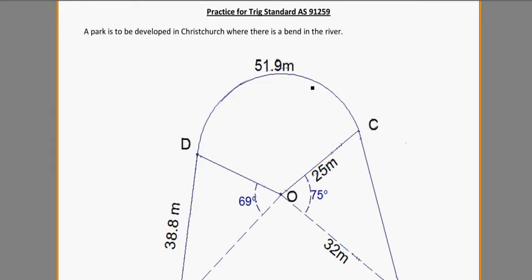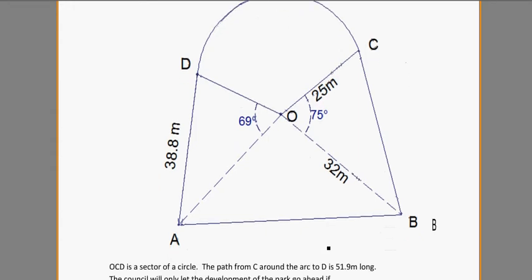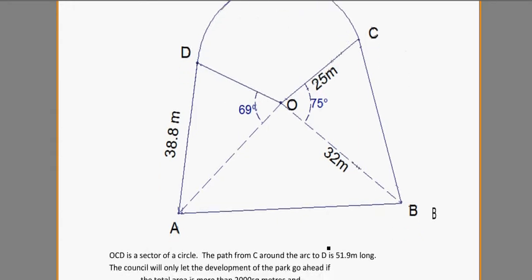First thing I do is probably take a quick glance at the diagram and just notice that I've got a multi-component shape here. I've got a sector, three triangles, bits of information. I notice that I don't have everything — I don't have angles here and here, I don't have very many side lengths. So I'm going to have to find stuff, which is expected for the internal.